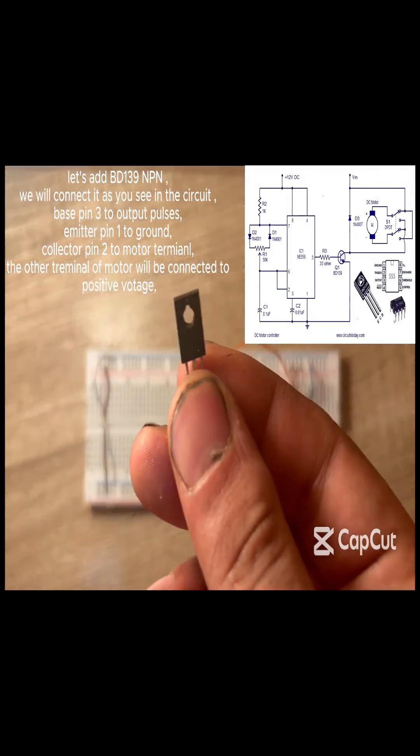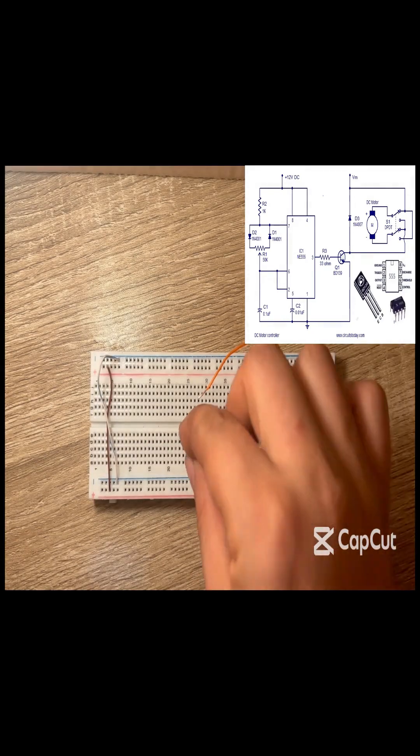Let's add BD139 NPN transistor. We will connect it as you see in the circuit.